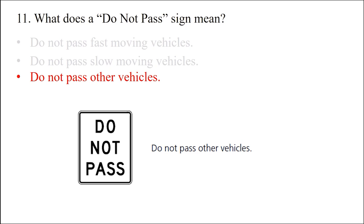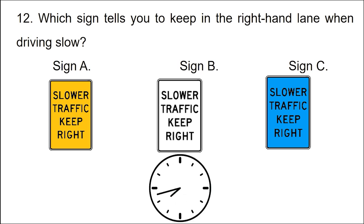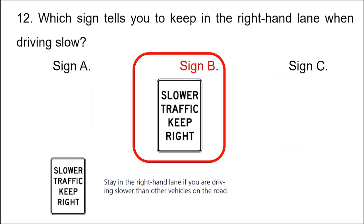Question: Which sign tells you to keep in the right-hand lane when driving slow? Option 1: Sign A. Option 2: Sign B. Option 3: Sign C. The answer is option 2: Sign B. Stay in the right-hand lane if you are driving slower than other vehicles on the road.